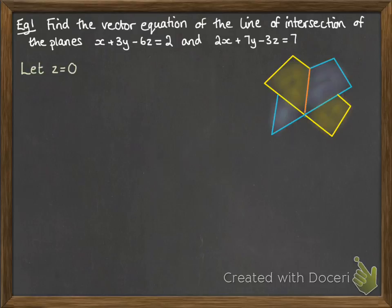So we can set z to be 0 in this case. That's going to give us some nice numbers. So then we've got simultaneous equations to work out y and x and we get the coordinates of a point that is on that line of intersection.